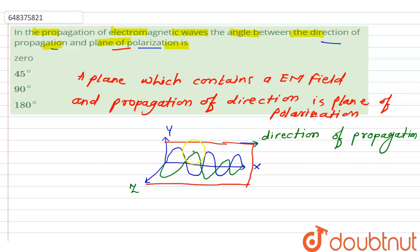Therefore, this is also the plane of polarization where the direction of the propagation of this wave and the electromagnetic field's contact. Therefore, it makes an angle of zero degrees.